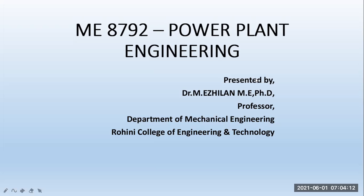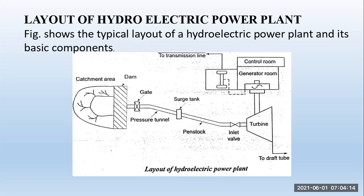Today we are going to discuss about the layout of hydroelectric power plant. The typical layout of a hydroelectric power plant and its basic components are: dam, gate, pressure tunnel, surge tank, penstock, turbine, and generator.